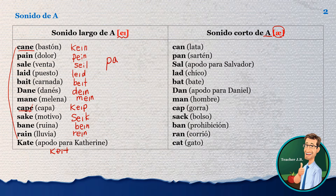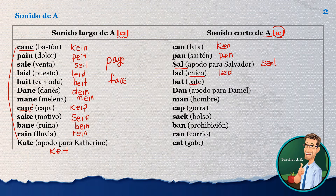For example, this is 'page,' and this is 'face.' And the other sound we are going to study today is the short E sound. Lata — that's 'can.' Sartén — that's 'pan.' Apodo para Salvador — that's 'sal.' En chico — that's 'lead.' Bate — that's 'bat,' bat.